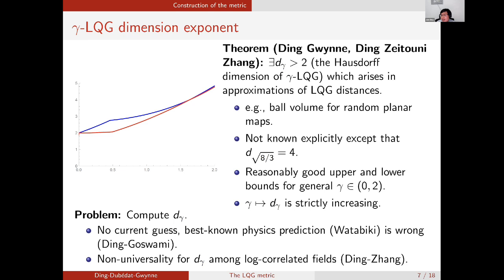One possible approach to compute d_gamma is via a different construction of LQG by Duplantier, Miller, and Sheffield. I will conclude my presentation here, and Julien will continue.